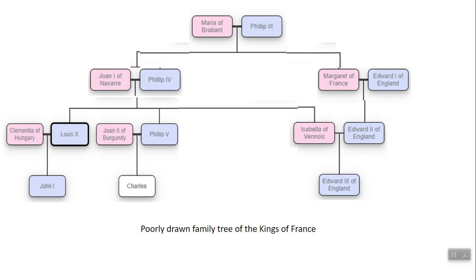Philip IV is going to go on to have three kids: a kid named Louis, a kid named Philip, and a kid named Isabella. Louis X is going to have one child — John — who dies as an infant. John is technically king for about six months while less than a year old. Once Louis and John are both dead, it goes to Philip IV's next oldest, Philip V. Philip V has a son named Charles, who doesn't have any kids. So then it has to go to the next closest, which would be Isabella — but Isabella can't become king because there was no such thing as a queen of France. So technically, the next person who should have been king of France was the son of Isabella, Edward III of England.